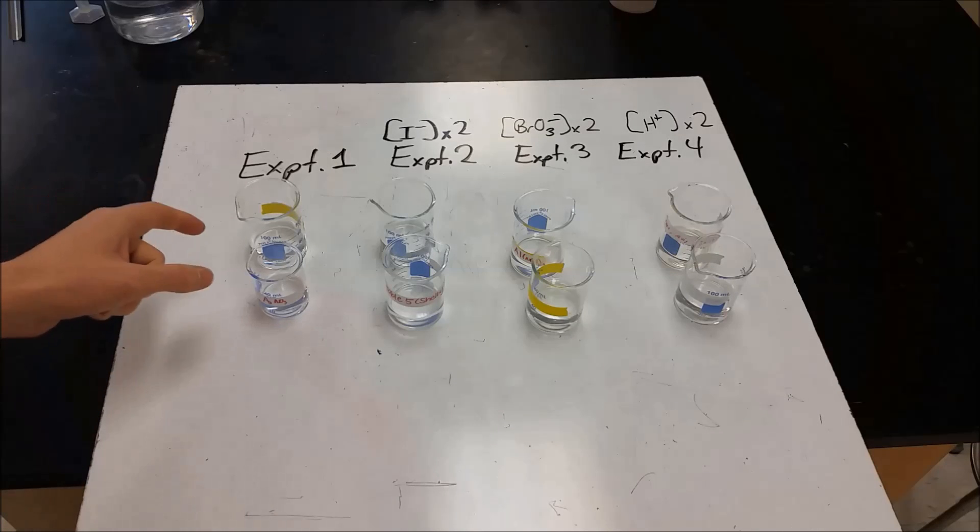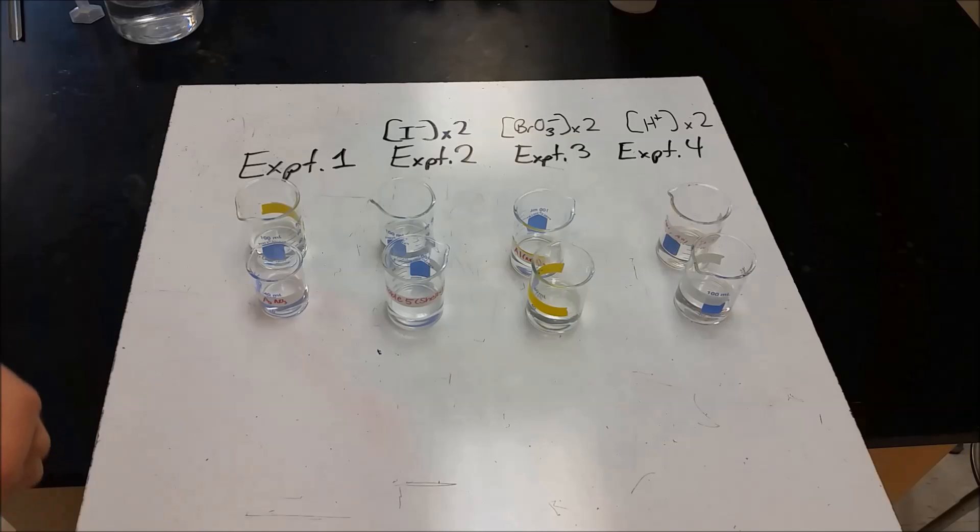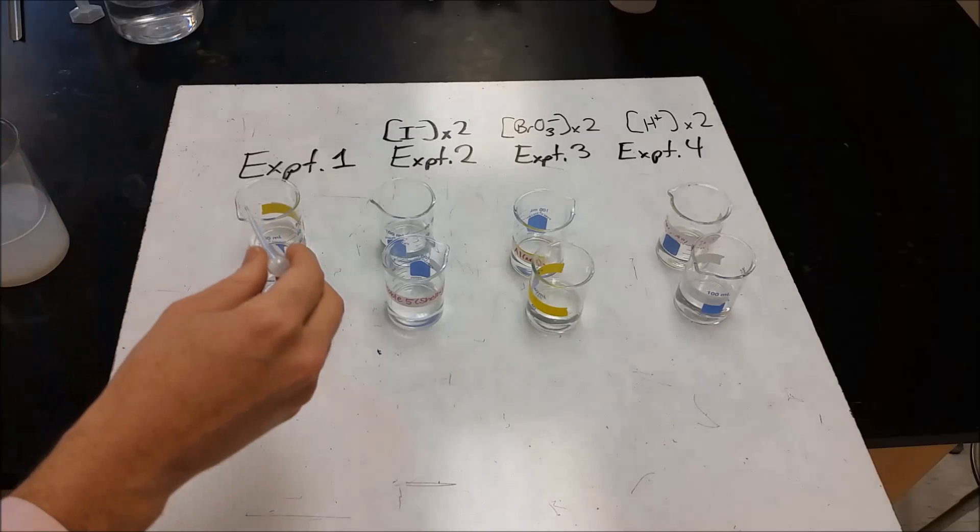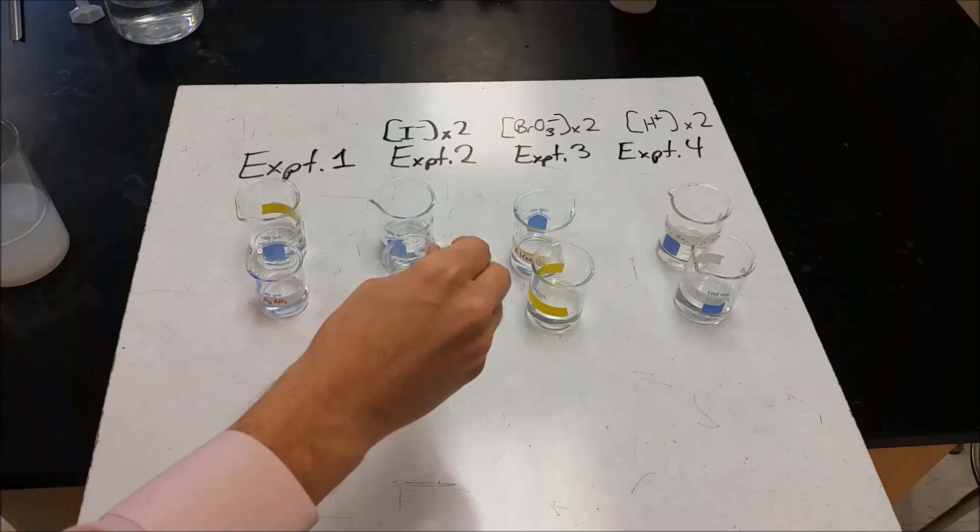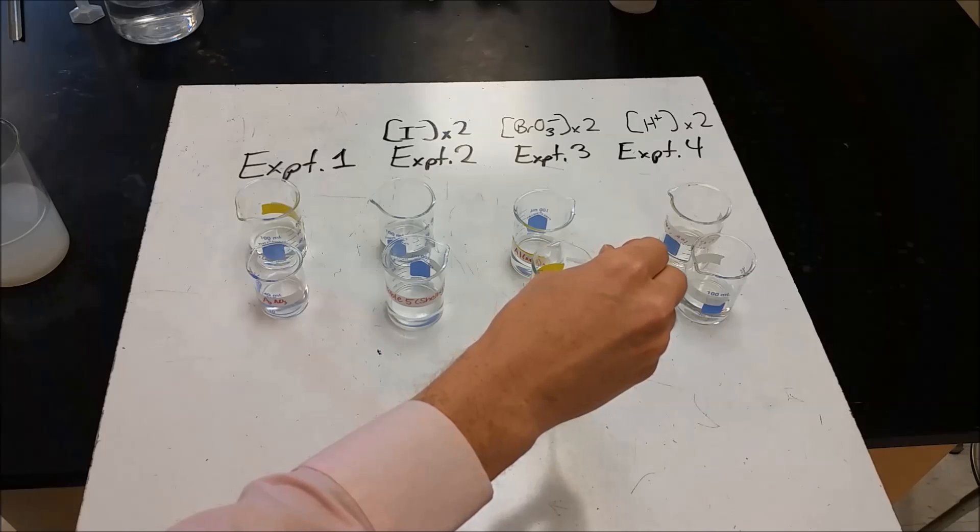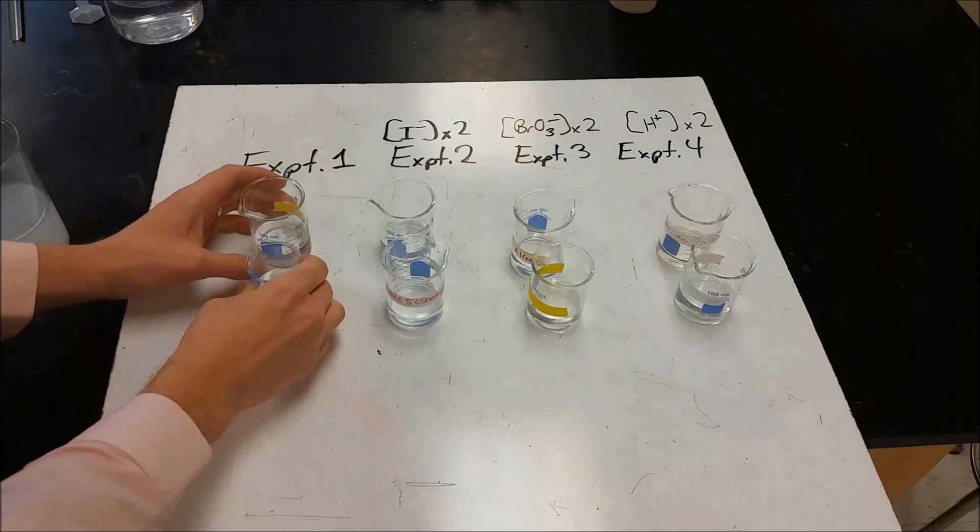We're going to do a clock reaction, and what we have here is two beakers. We're going to mix the two beakers, and there's going to be a reaction that happens, and when that reaction has completed to a certain point, it's going to cause a subsequent reaction to happen, which is going to cause a color change. So what we're going to do here is we're going to add a little bit of indicator to give us an endpoint. We're going to start the solution here, and we're going to go ahead and mix.